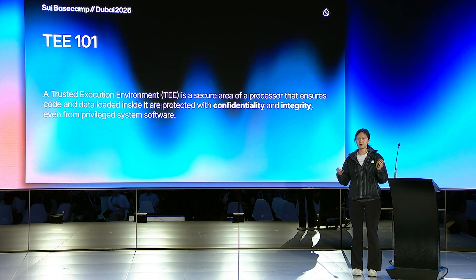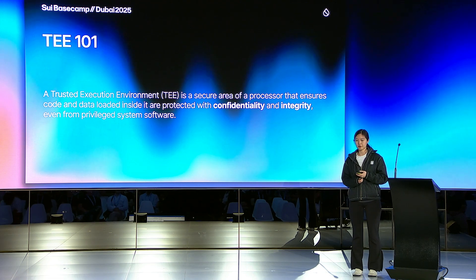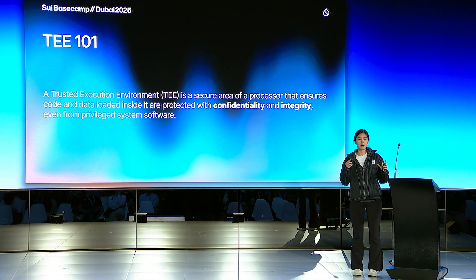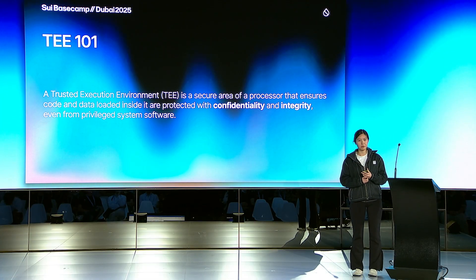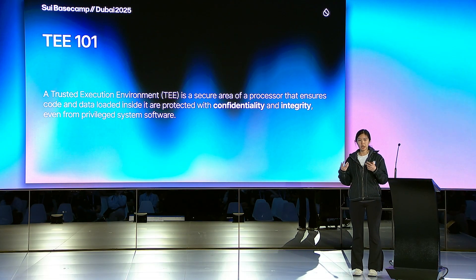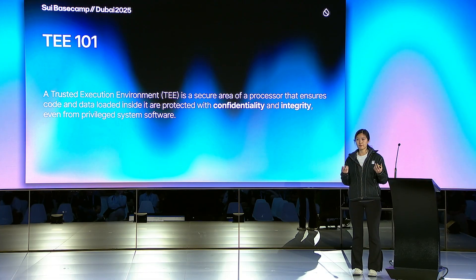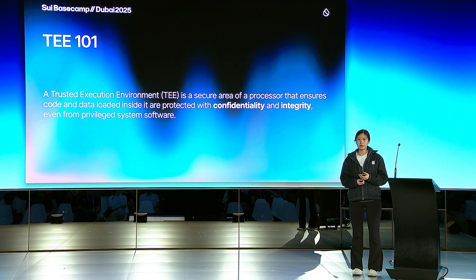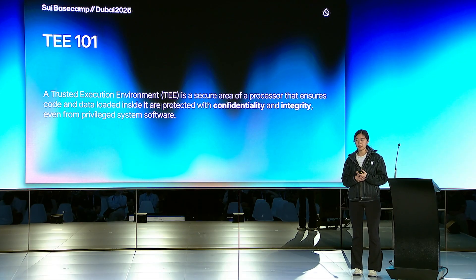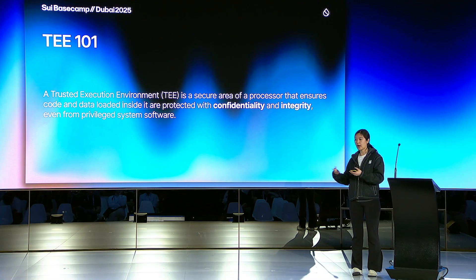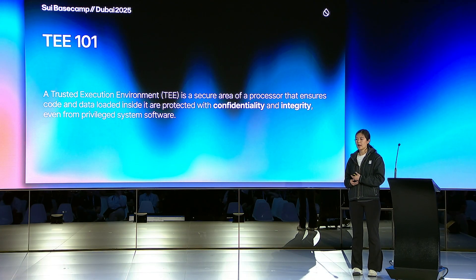Let me give you a quick crash course on how TEE works. A Trusted Execution Environment is essentially a secure part of a machine where you can run very secure computations, and it comes with two very important properties: confidentiality and integrity. Confidentiality means you can actually generate a private key inside the Enclave, and you have the hardware guarantee that no one else can access such a private key — even system programs with privileges. The Enclave can encrypt sensitive data, and only the Enclave, which holds the only ownership of that private key, can decrypt such information and return your result.